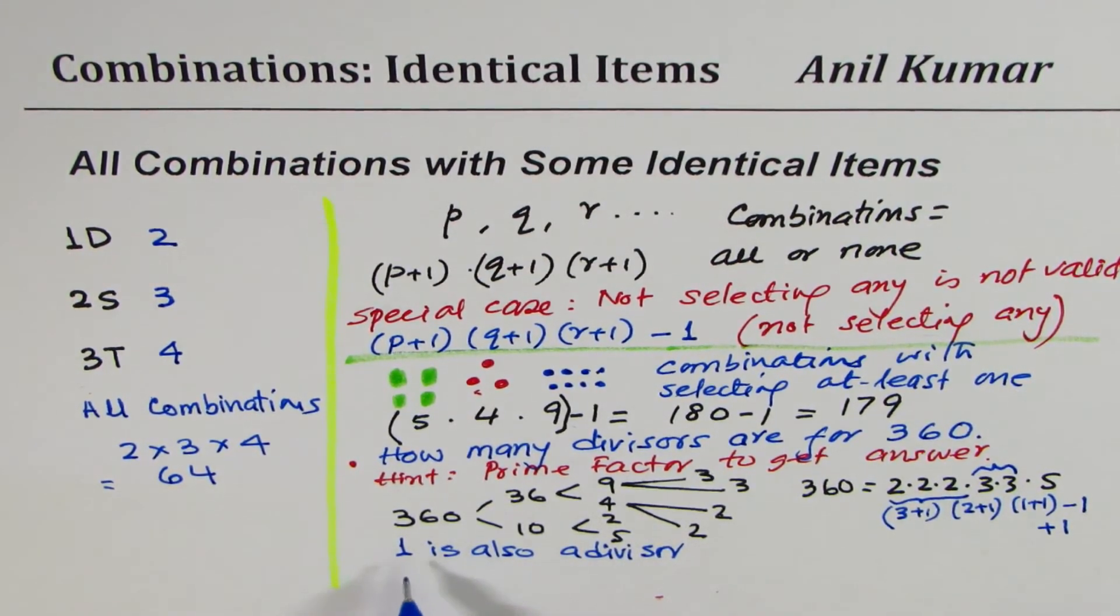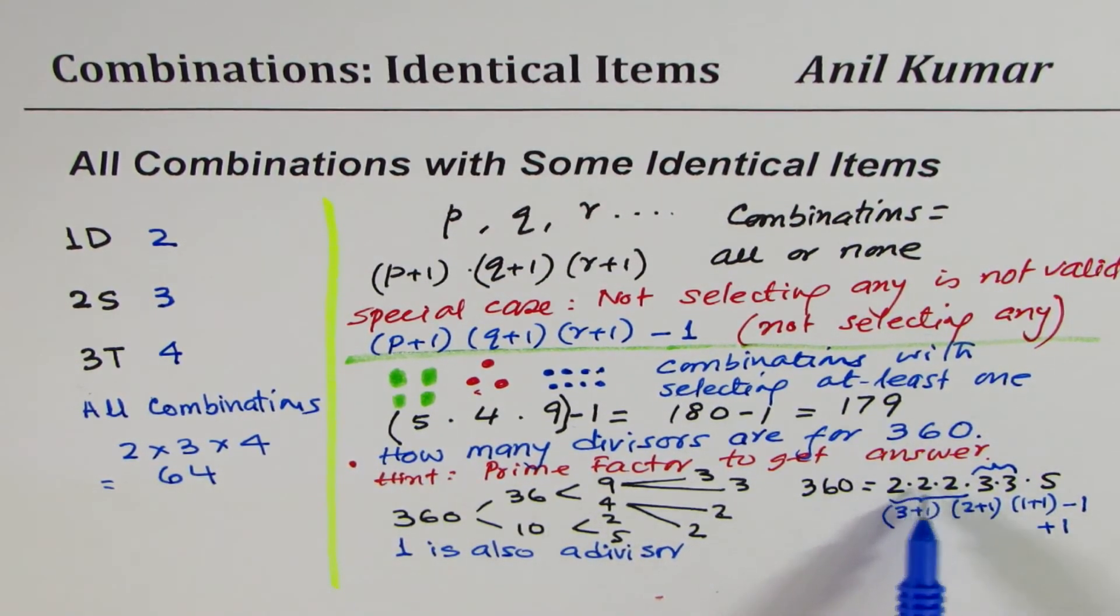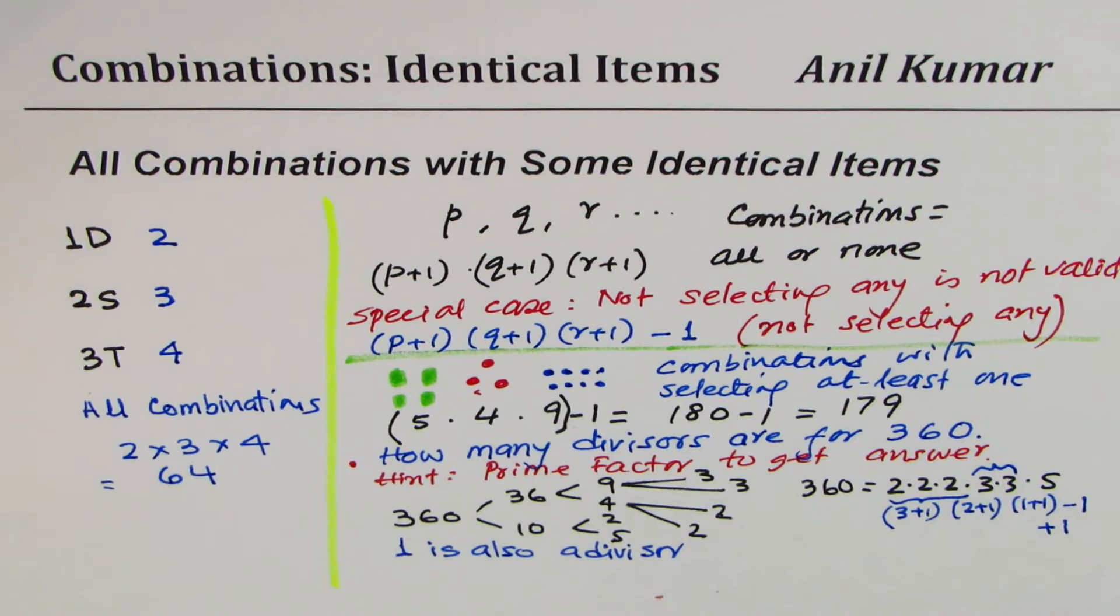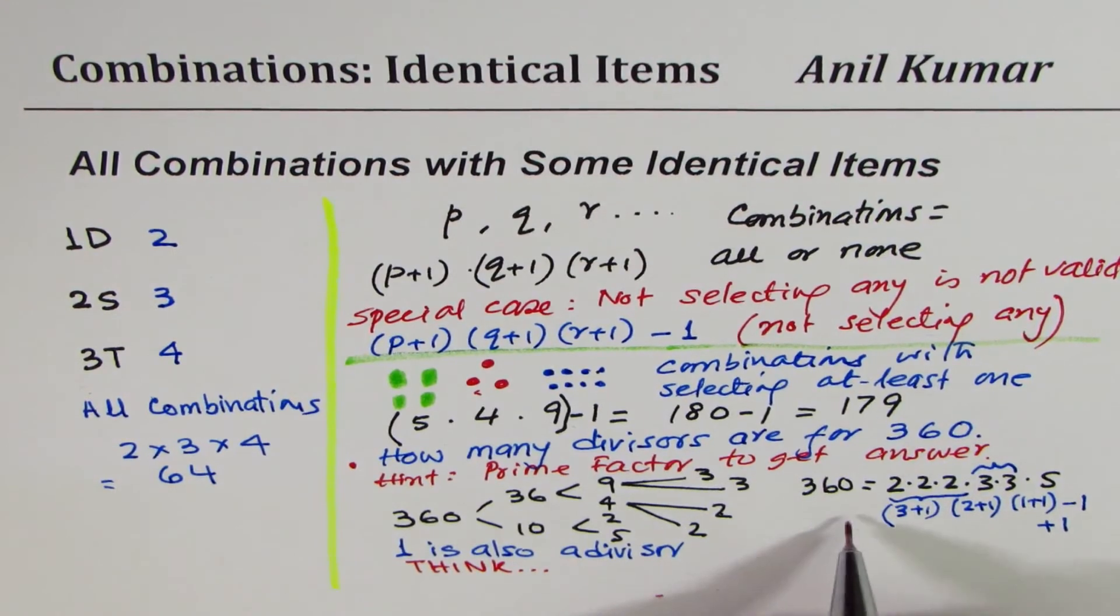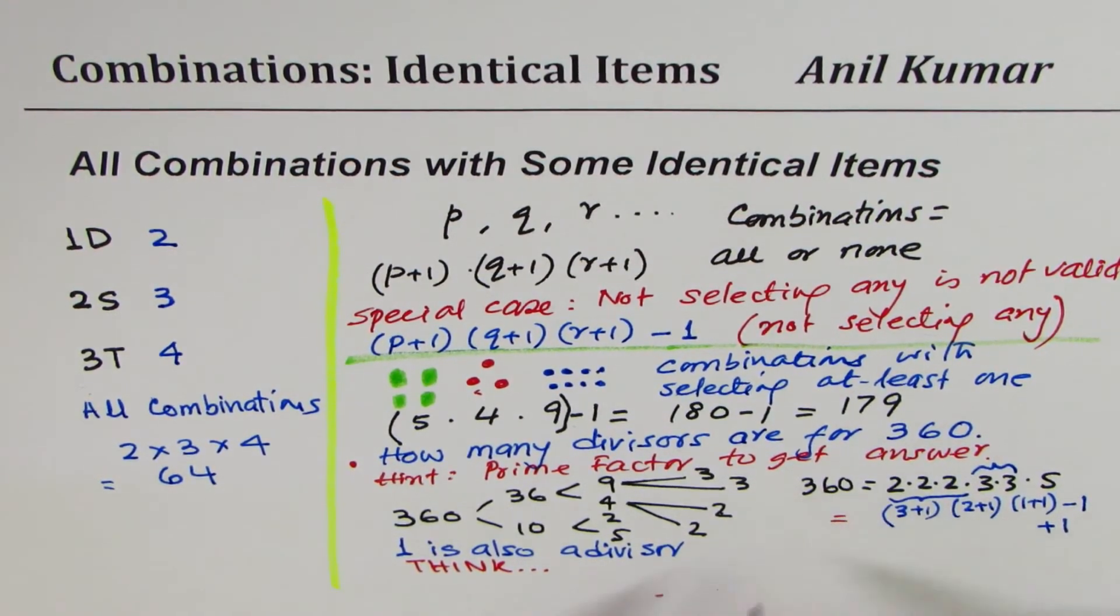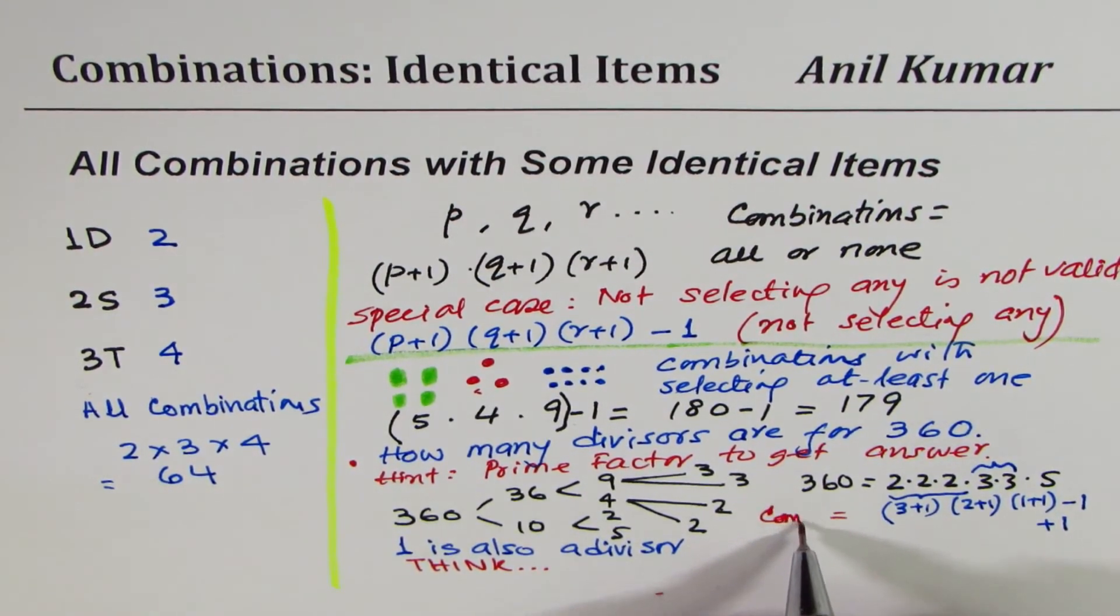The idea is including 1 and not including 1. Not including 1 means the other factors, so that doesn't have any meaning. So at times you may have to think. That is important. So that becomes the answer for the given case, and these are the combinations.